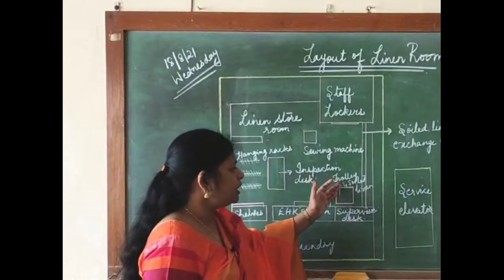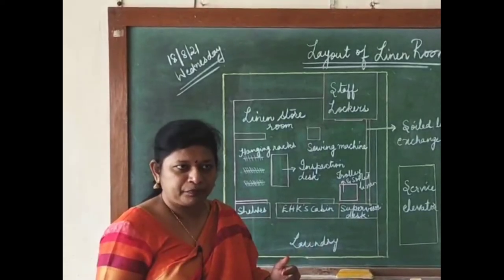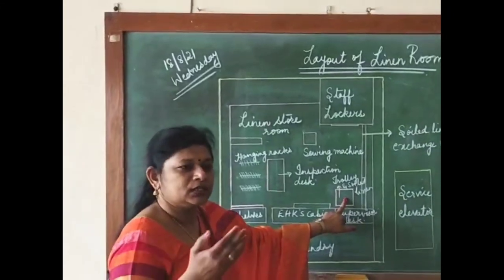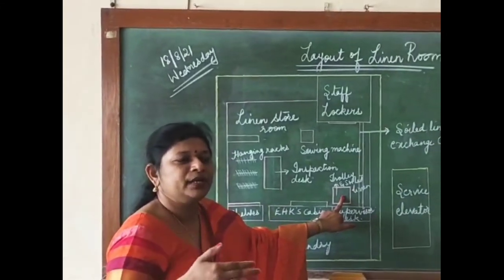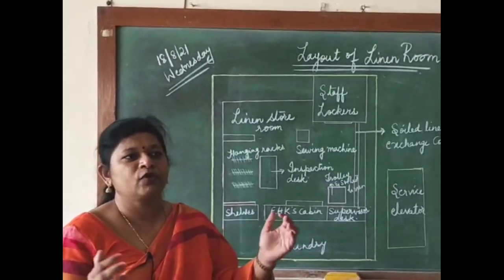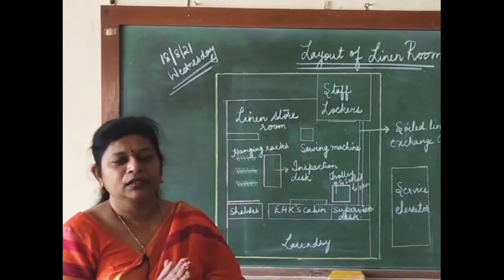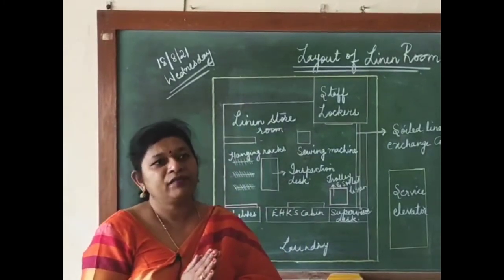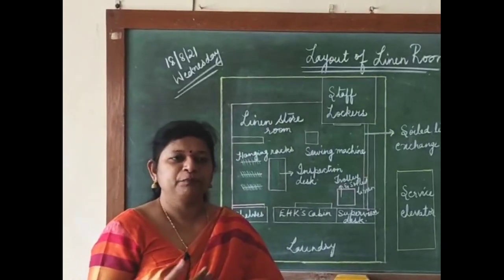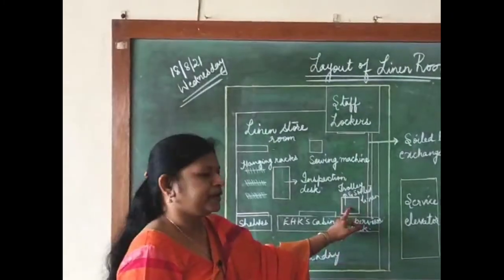Then we have trolleys for soil linen. The linen gets transferred from the linen room to the laundry via a passage using trolleys. No unhygienic practices such as holding linen in the hands, putting it under the arms, or carrying it on the head are permitted. We have specific equipment — trolleys — to carry linen to the laundry and vice versa. Fresh linen from the laundry back to the linen room must also be transported using trolleys.